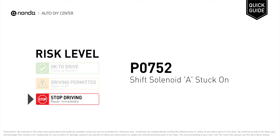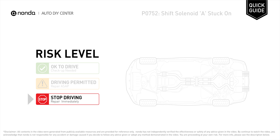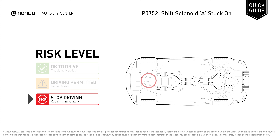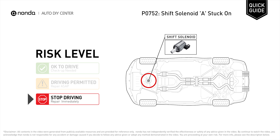P0752 is a diagnostic trouble code for shift solenoid A stuck on. It is associated with the detected stuck on transmission shift solenoid A. Under this circumstance, stop driving and repair your vehicle immediately.